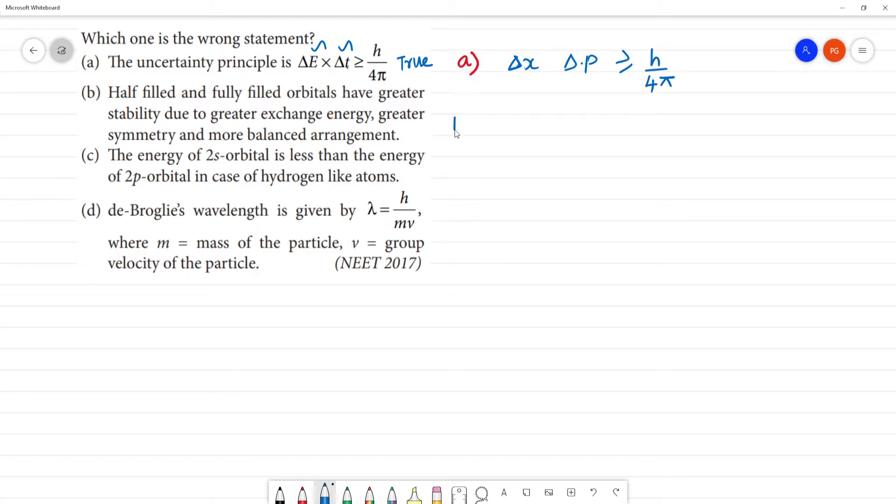Next, B one. Half-filled and fully-filled orbitals have greater stability. So, we can see half-filled - one electron over orbital, one electron over orbital. So, this is having more stability.